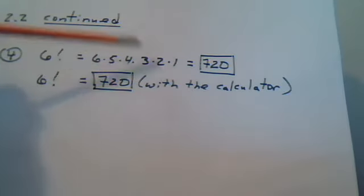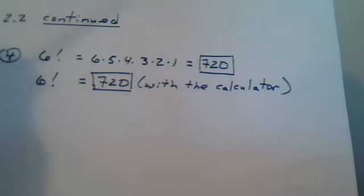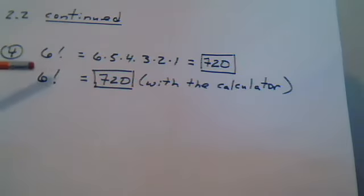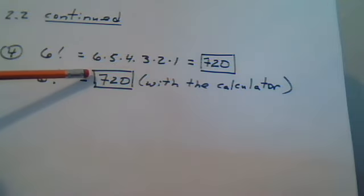So if you did it the long way, you would multiply these numbers out and get 720. And if you use your calculator, you'll get 720. And let's look at why it's quicker with the calculator.